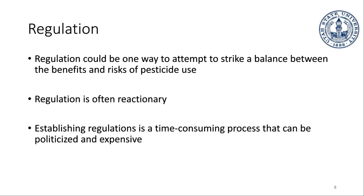These regulations are often reactionary — they often don't get established until something goes wrong. Establishing regulations and determining the different thresholds and limits is going to be a very time-consuming and expensive process, and it can also be politicized. The EPA, depending on the president, is going to be run very differently. Over the past decade — from Obama to Trump to Biden — you could really see the importance, or lack of importance, placed on the EPA, evident in spending, priorities, and decisions about which pesticides were allowed.